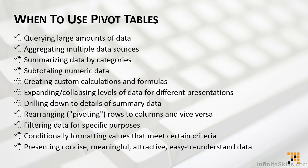And lastly, maybe most overwhelmingly, pivot tables allow us to present concise, meaningful, attractive, easy-to-understand data. In short, pivot tables do three things: they simplify data by categorizing it by one or more fields; they compact it by taking out the redundancy and allowing us to view values both across columns as well as down rows; and they summarize by providing calculations for the values we choose. And they do it all with just a few clicks and possibly a couple of drags across the screen. This is what pivot tables do, and why we use them.